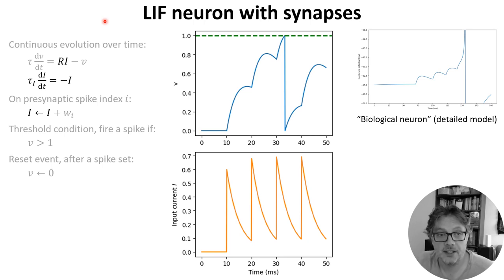we're going to model that by adding a differential equation tau i di by dt equals minus i, similar to what we had before for the membrane potential with its own time constant tau i. We also add that current i to the differential equation for v here, multiplied by a constant r.